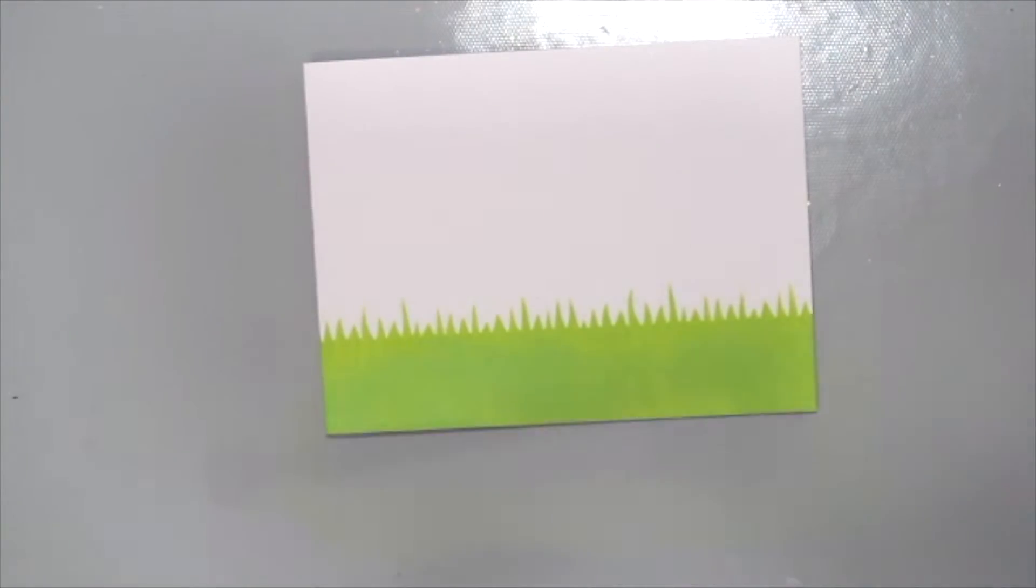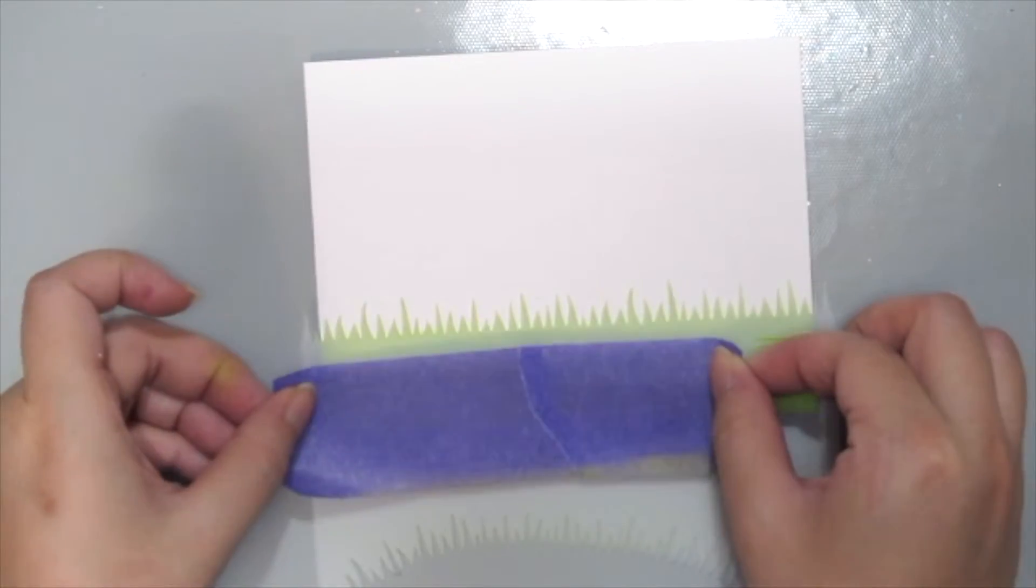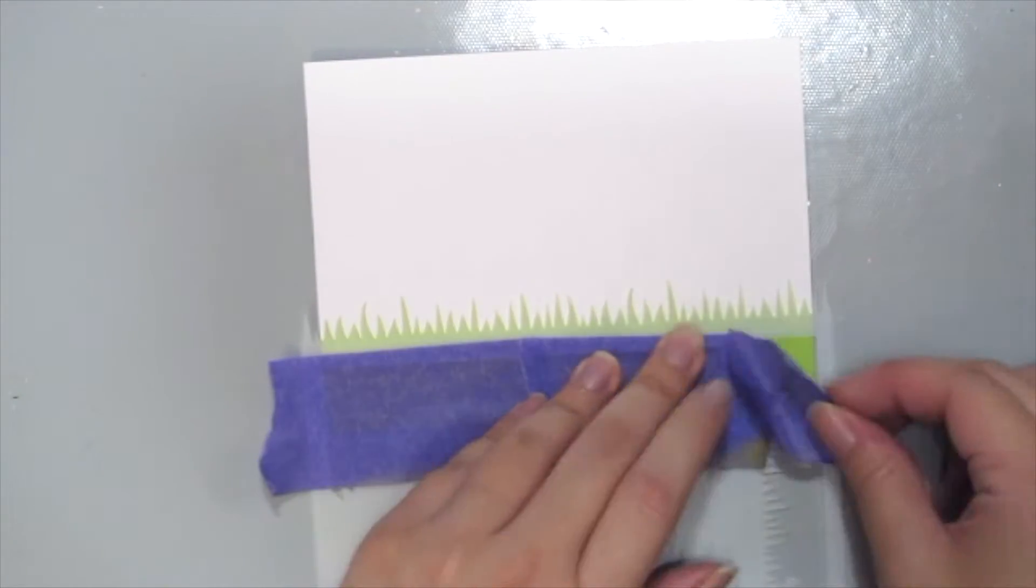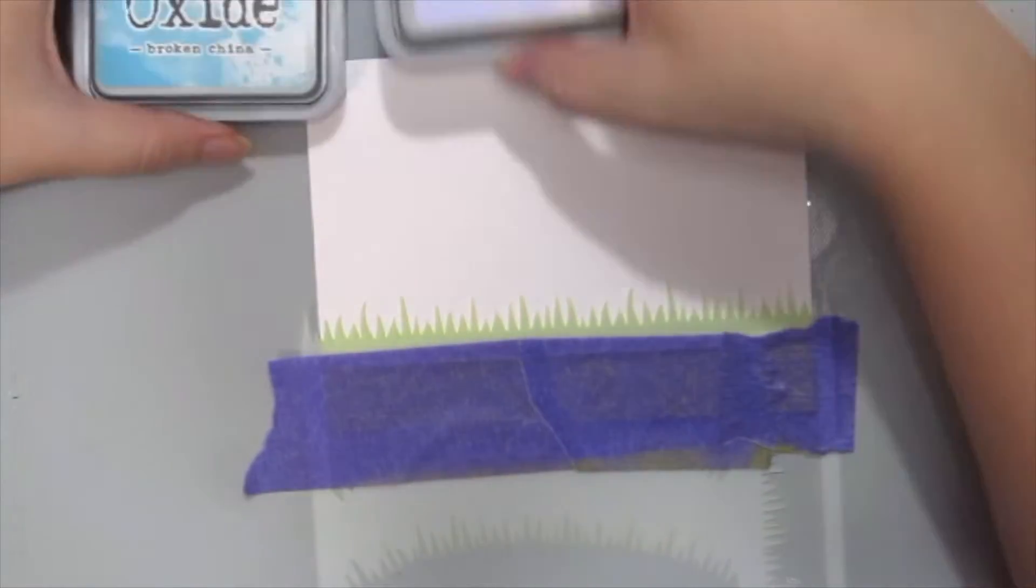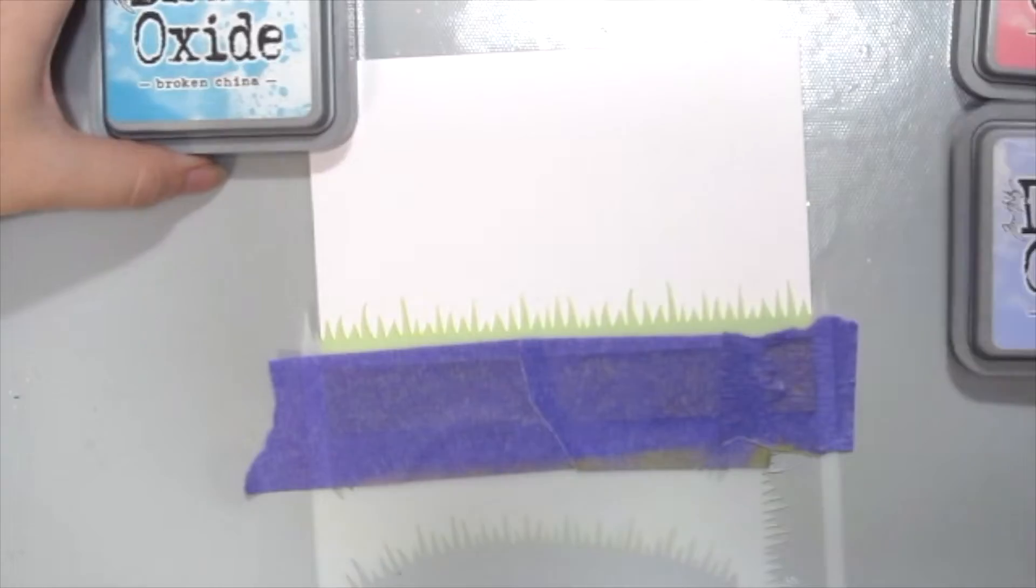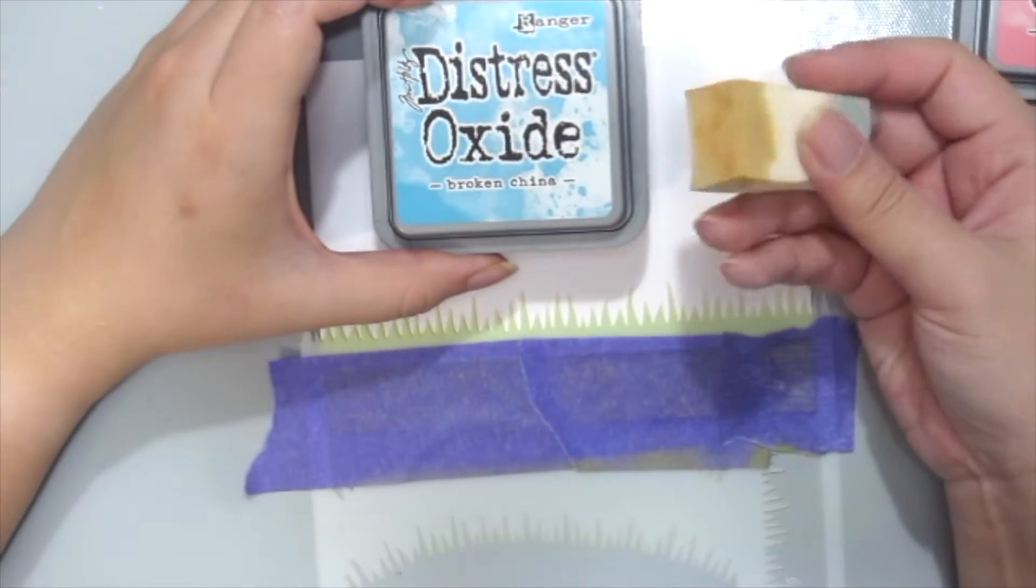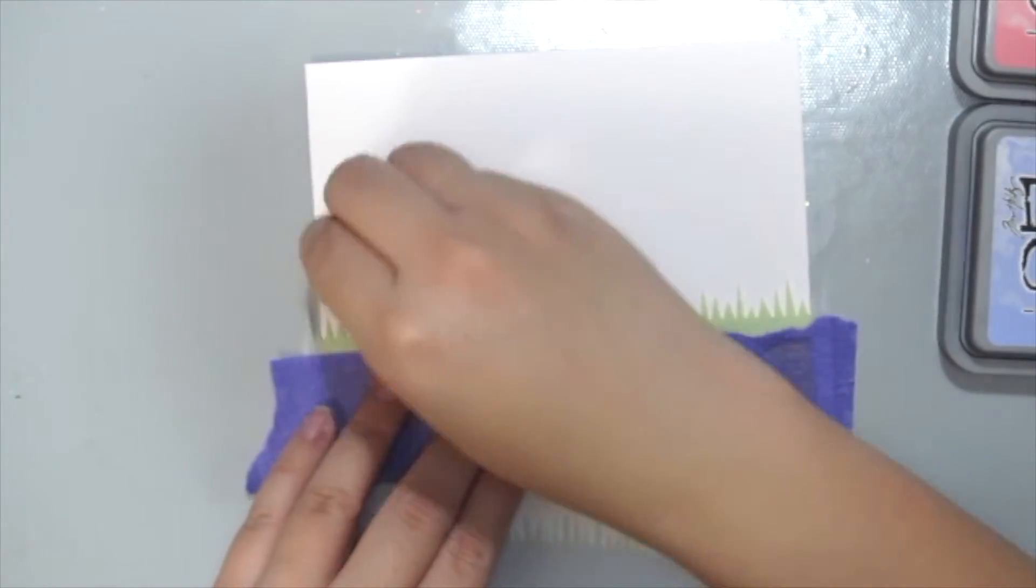Now to ink the rainbow sky up, I'm using the top part of the stencil here, and again using my thermal web purple tape to mask the stencil off. Next, I'm grabbing some rainbow colors Oxide inks and, of course, a handy dandy tool which is my makeup sponge.